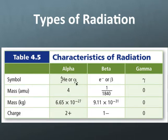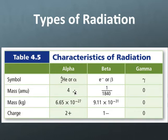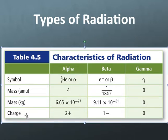To summarize all three types: alpha decay has the symbol as the Greek letter alpha or helium-4 (mass number 4, atomic number 2); beta decay is written as an electron or the Greek letter beta; gamma is the Greek letter gamma. For relative masses: alpha has four amu (two protons, two neutrons); beta has essentially zero mass since it's an electron; gamma truly has zero mass. For charge: alpha has a positive two charge, beta has a negative one charge, and gamma is neutral. You need to know these for the quiz and test.